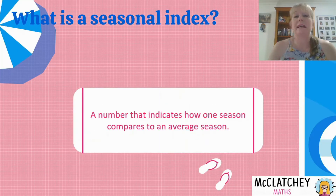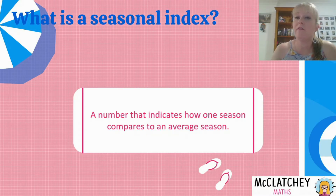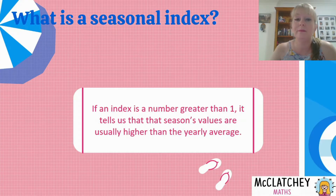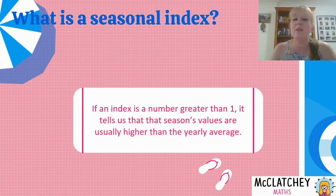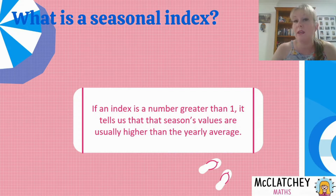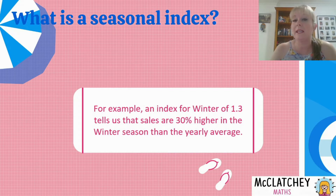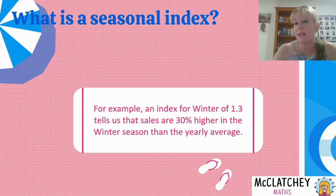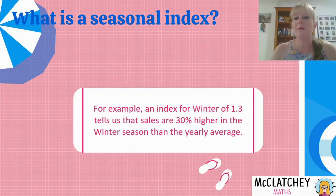So firstly, what's a seasonal index? It's a number that indicates how one season compares to an average season, and a seasonal index can be calculated as a decimal or as a percentage. If the index or percentage is greater than 1 or 100%, it tells us that a season's values are usually higher than the average for the whole year. For example, if my index for winter was 1.3, that would tell me that sales are 30% higher — because 1 is 100% and 0.3 is 30% more — than the average for the whole year.